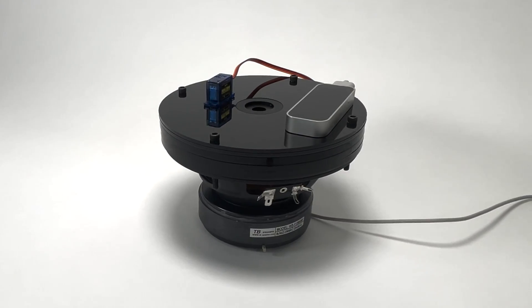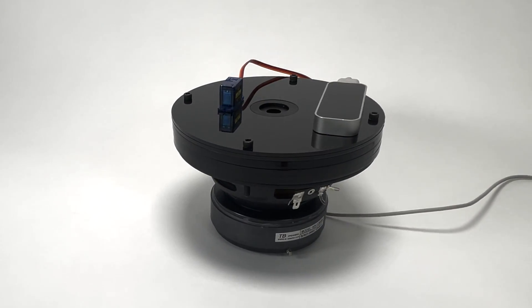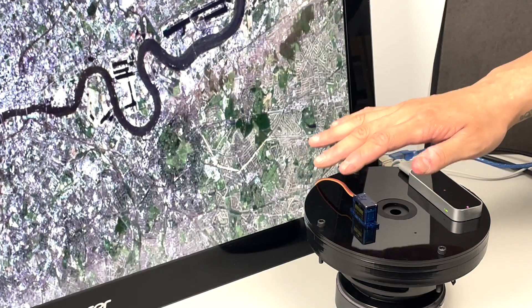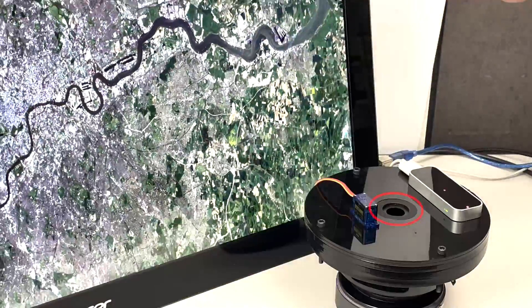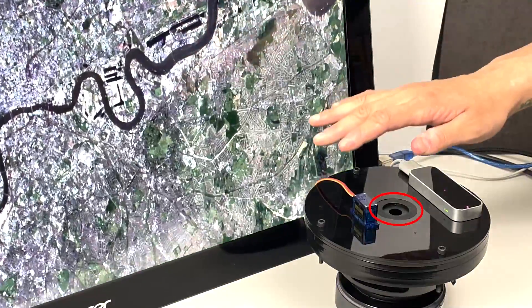Mid-air haptics is often coupled with applications employing free space hand input. Here, we utilized a dynamic nozzle to vary the thickness of the jet stream to convey the zoom level.